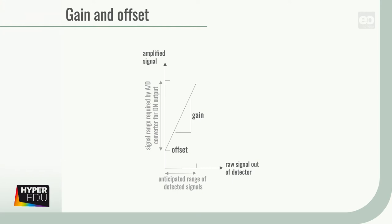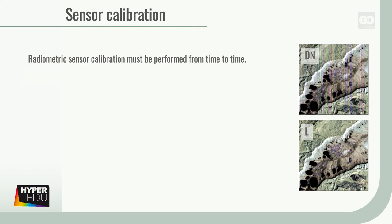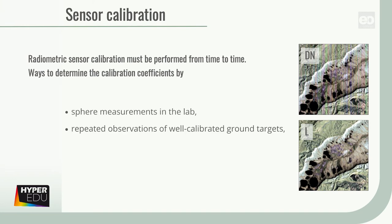Though often assumed constant over time, calibration gain and offset usually change throughout a sensor's life. Therefore, radiometric calibration of the sensor must be performed from time to time, and there are different ways to determine the calibration coefficients. For example, by sphere measurements in the lab, by repeated observations of well-calibrated ground targets, onboard calibration, dark current calibration, shutter, and or lunar observations.